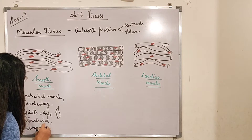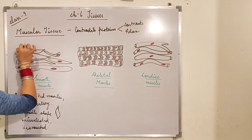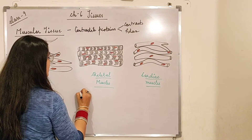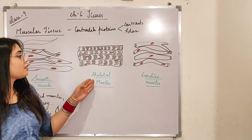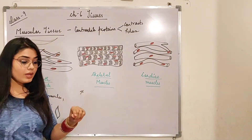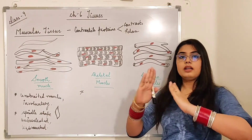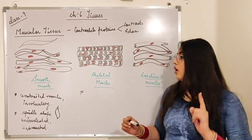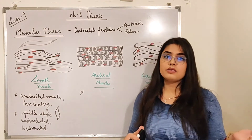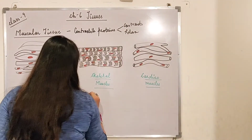Now let's come to the skeletal muscle. Looking at this picture, you can see there are light bands then dark, then light then dark — light and dark bands alternating. When light and dark bands are present alternately, that structure is referred to as striated, meaning striations are present in the form of light and dark bands. So skeletal muscles are striated muscles.